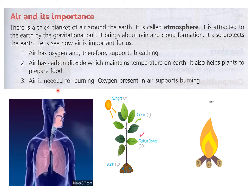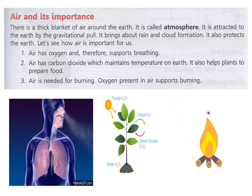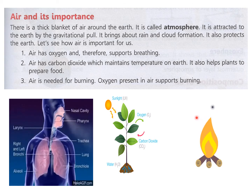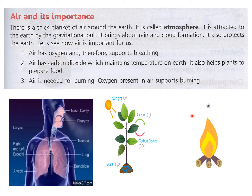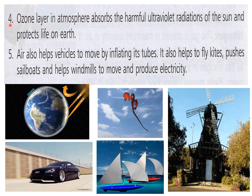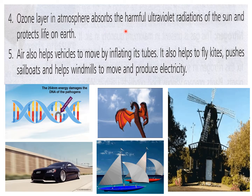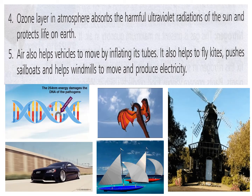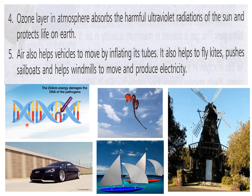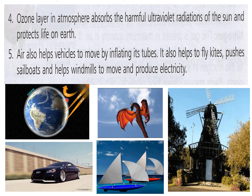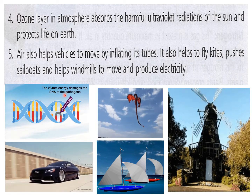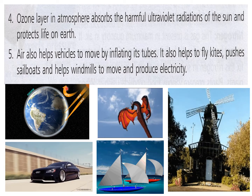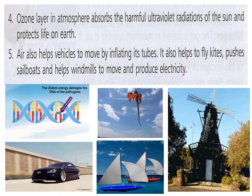Number three: air is needed for burning. Oxygen present in air supports burning — you can see wood burning because of the presence of oxygen in the atmosphere. If there were no oxygen, the fire would not burn. Number four: the ozone layer in the atmosphere absorbs the harmful ultraviolet radiations of the sun, protecting life on earth by reflecting UV rays and not letting them enter the earth's atmosphere.